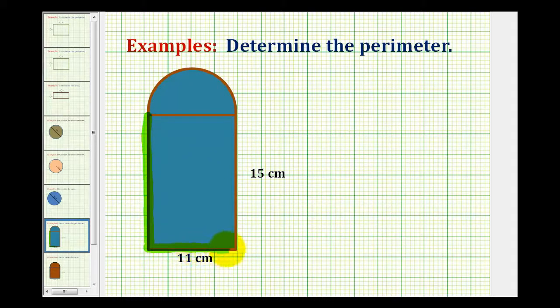Here, here, and here, and then we'd have the top part, which would be half of the circumference of the circle with a diameter of 11 centimeters. The length of this diameter would be the same as the length of the opposite side.